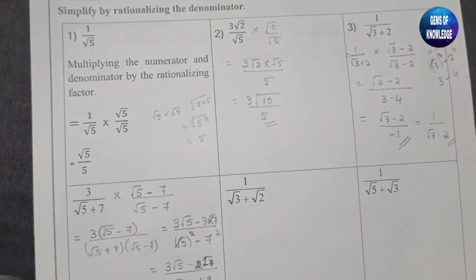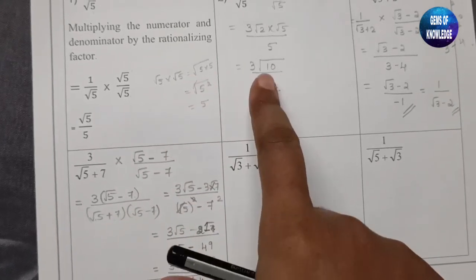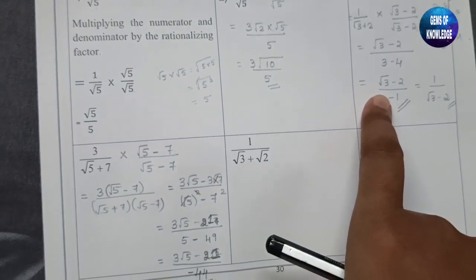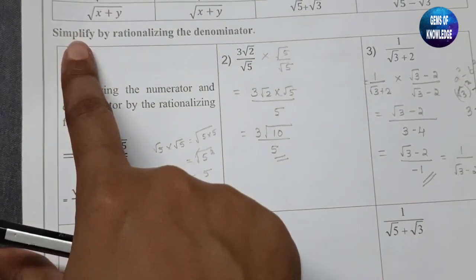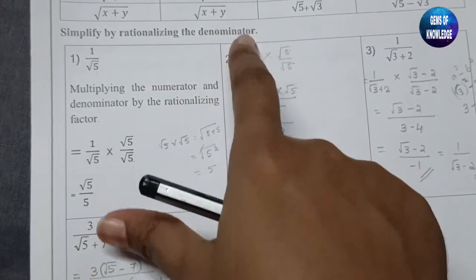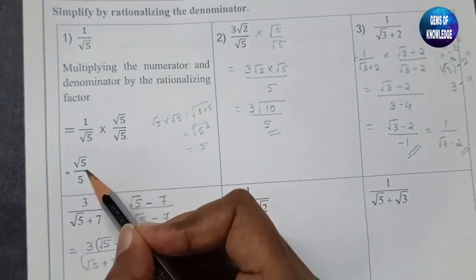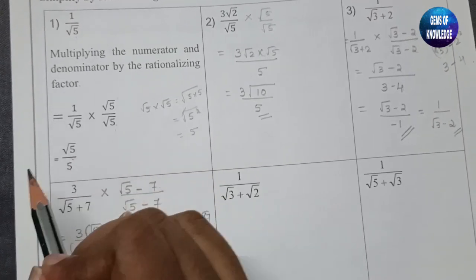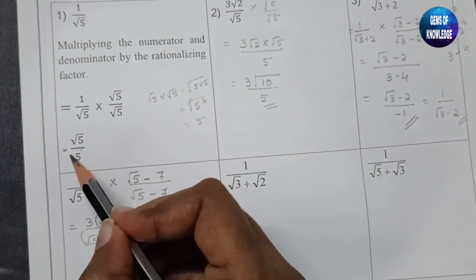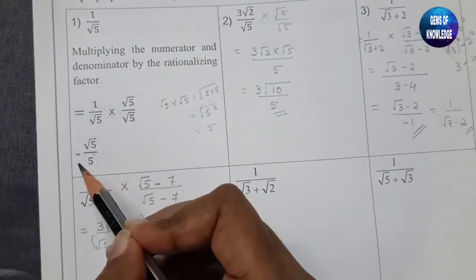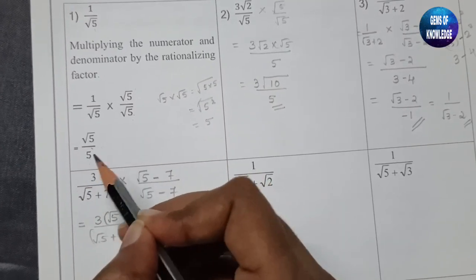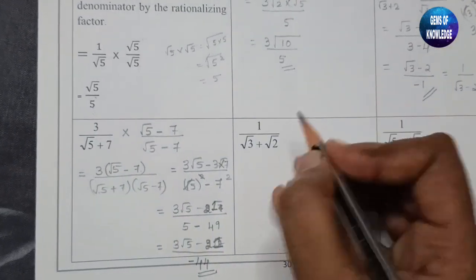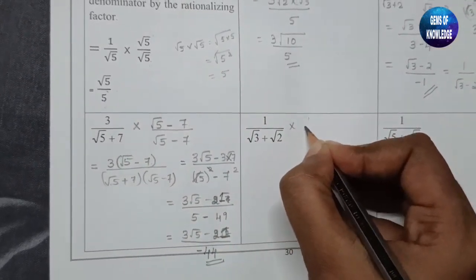After looking at all these questions, you might notice that the root number remains in the numerator — only the denominator is being rationalized. That is because the question asks us to rationalize the denominator. The denominator must be a rational number; whether the numerator is rational or irrational does not matter.